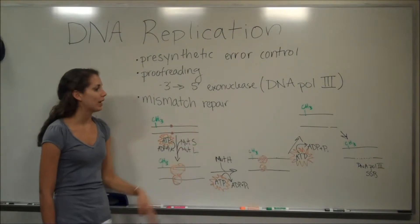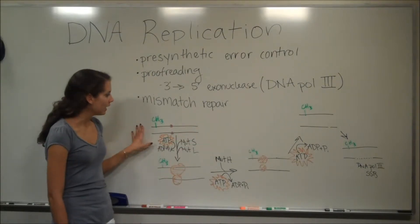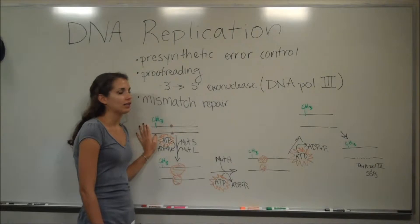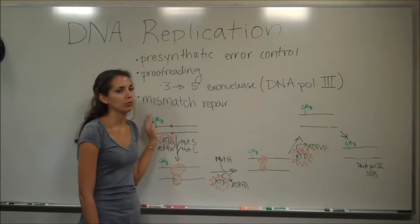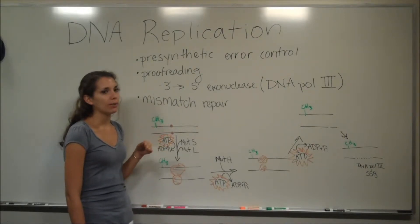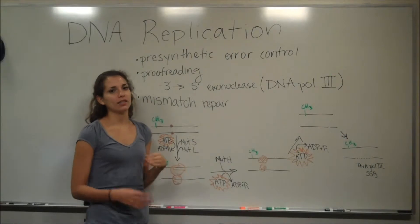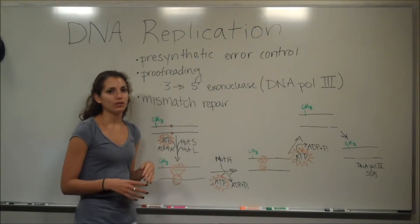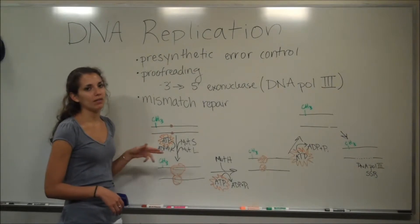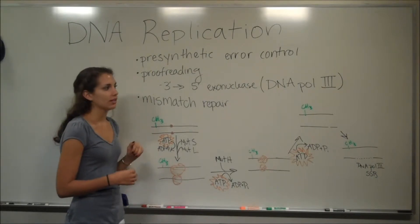So going into the mismatch repair, I drew a little picture of it. Basically, you need to know that the parental strand of DNA is going to be methylated, and the new strand is not. So this hemimethylation is required for the mismatch repair system to work. If both strands are methylated, then the system will not work because it recognizes them both as parental strands. If it's hemimethylated, then it knows that one of them is probably just synthesized.